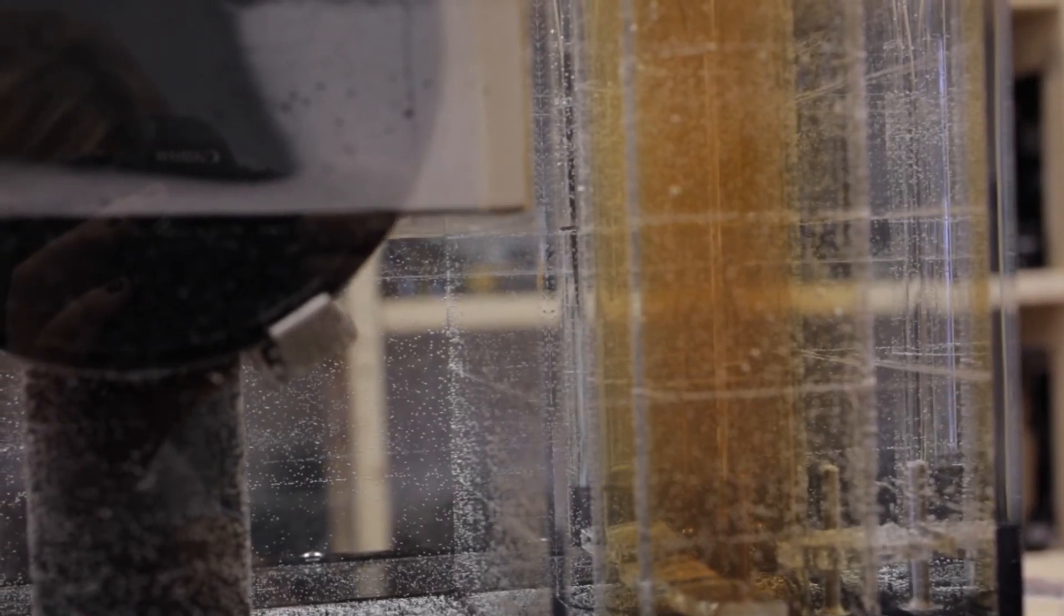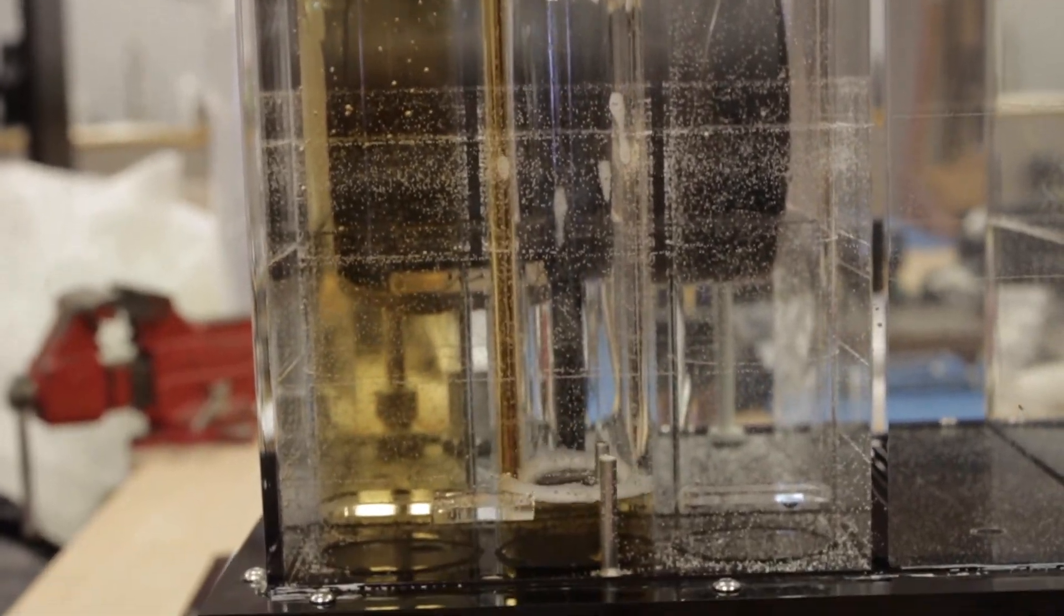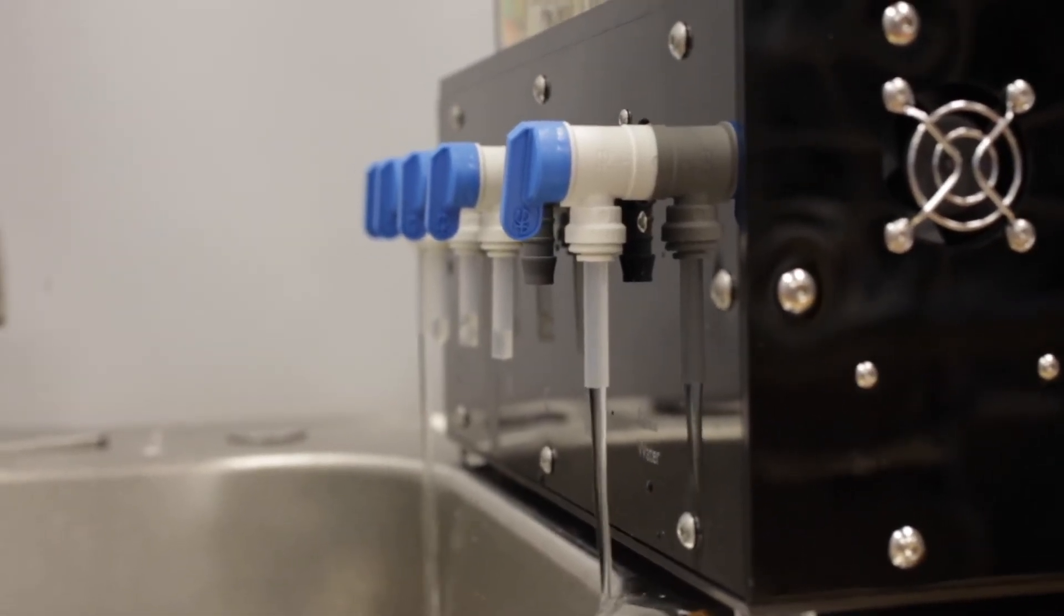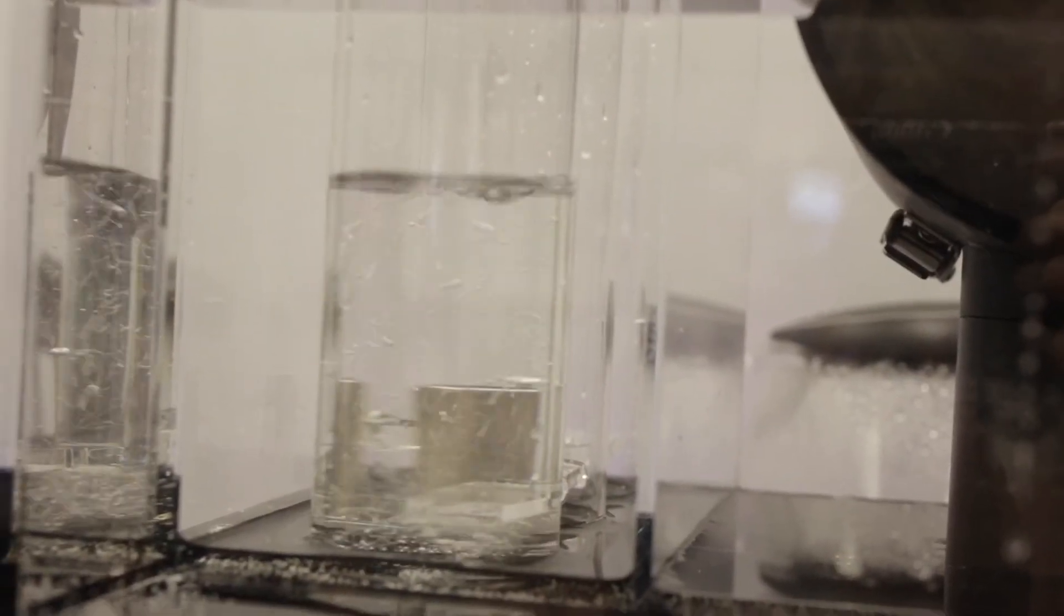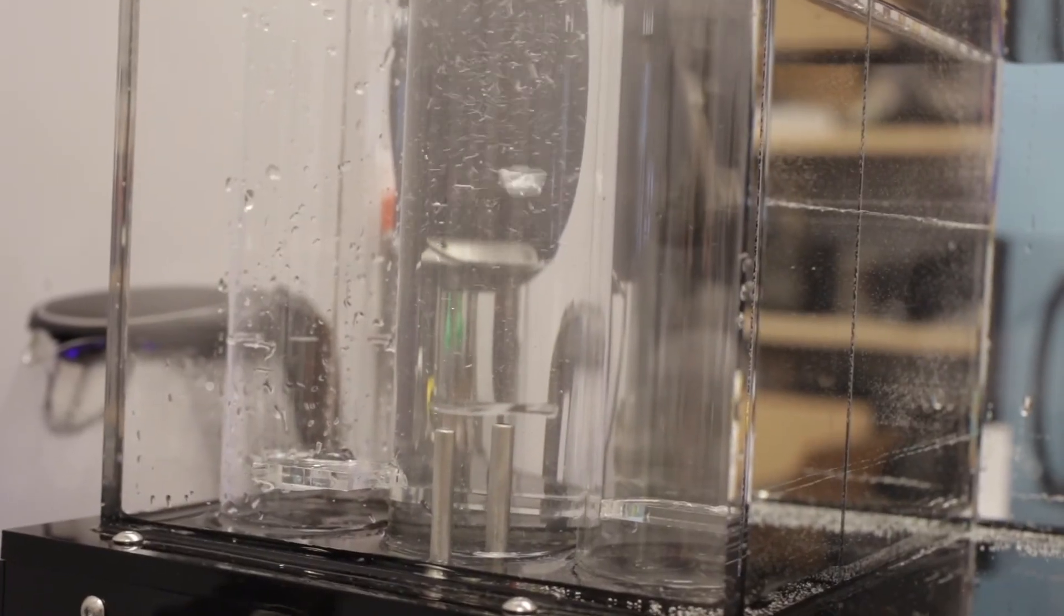And finally, the Filmomat also has an automatic cleaning process. So after you're done developing, just empty the chemical tanks and fill the wash tank with water. Attach an empty film tank and start the process. This cleaning process automatically flushes every compartment, pipe, and valve several times to ensure that there is no contamination next time you develop.